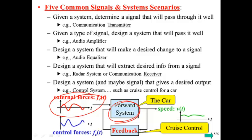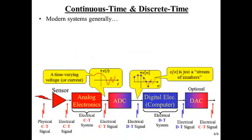And then we measure the speed of the car and we feedback that information as another input through possibly some other feedback system. And then that creates a control force that will counteract those external forces. And the goal is to keep the speed as constant as possible.